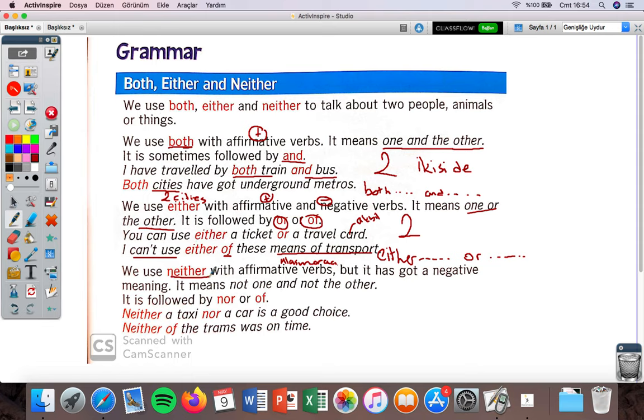Now, what about neither? We use neither with affirmative verbs, positive verbs, but it has got a negative meaning. So neither is like 'never'. Remember 'never' - for example, if I say I never drink water, it means I don't drink water. It has negative meaning. Neither is like never - you use it with positive verbs but it has a negative meaning.